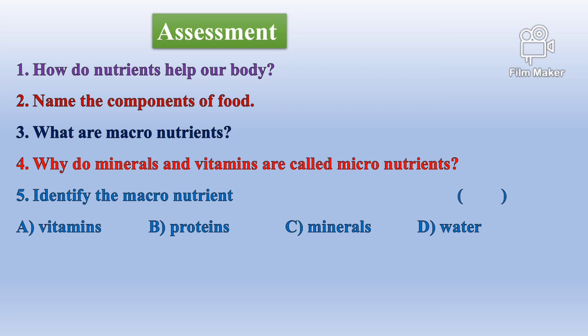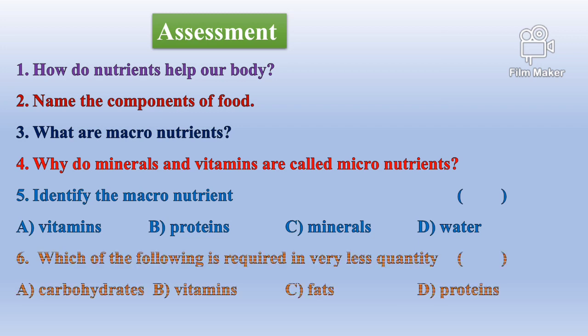Options for identifying macronutrients — A. Vitamins, B. Proteins, C. Minerals, D. Water. Which of the following is required in very less quantity? A. Carbohydrates, B. Vitamins, C. Fats, D. Proteins.